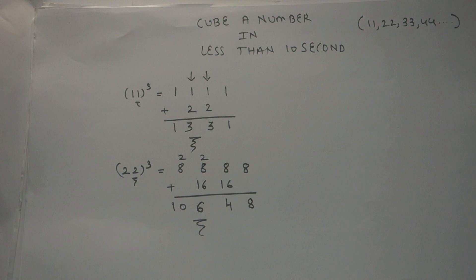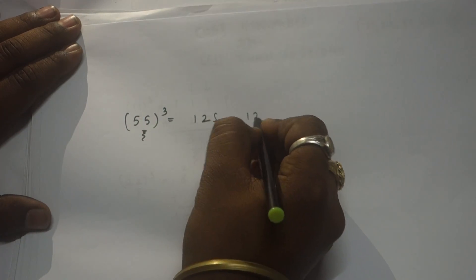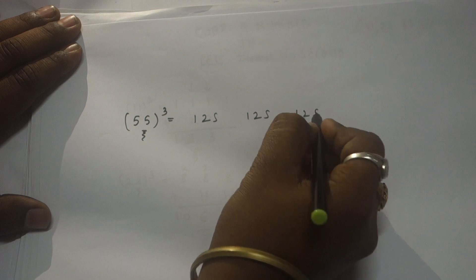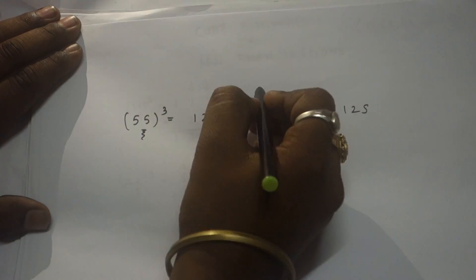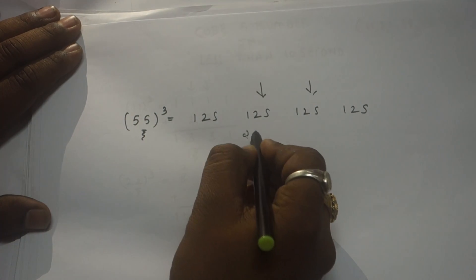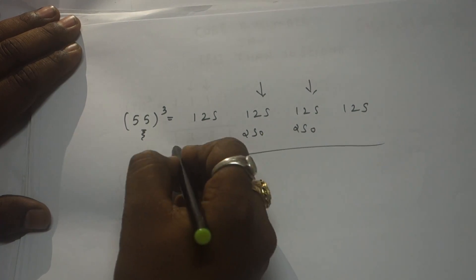Let's check one more example with a bigger number — 55 cubed. Apply the same fundamental. The digit is 5. What is the cube of 5? It is 125. Write 125 four times. Now double the middle two numbers, so this will be 250 and 250.